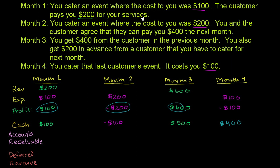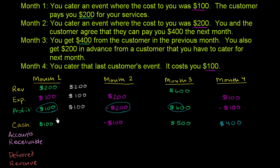In month one, you cater an event where the cost to you was $100 and the customer pays you $200 for your services. On the accrual accounting income statement, you actually provided the catering service, so you put $200 in for revenue. The expenses associated with that service in month one are $100, so your profit is $100. For month one, the cash basis and the accrual basis look exactly the same, and you have $100 in cash.